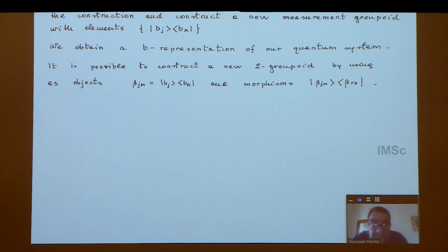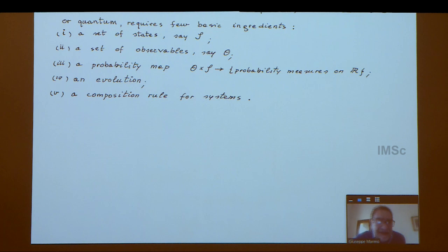This means inside the groupoid algebra, you select from the beginning a maximal abelian subalgebra. A groupoid in this respect contains not only all the observables, but also a choice of a maximal abelian subalgebra, which is what you need to make the measurement. Professor, you have three to five minutes left.